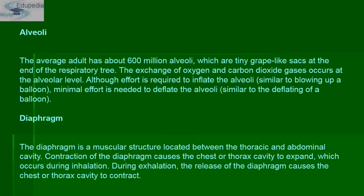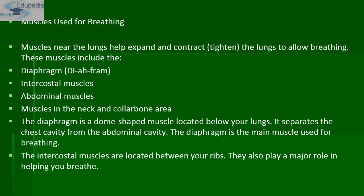After the alveoli comes the diaphragm. The diaphragm is a muscular structure located between the thoracic and abdominal cavities. Contraction of the diaphragm causes the thoracic cavity to expand, which occurs during inhalation. During exhalation, the release of the diaphragm causes the thoracic cavity to contract. There are also a few muscles used for breathing located near the lungs, including the diaphragm, intercostal muscles, abdominal muscles, and muscles in the neck and collarbone area.